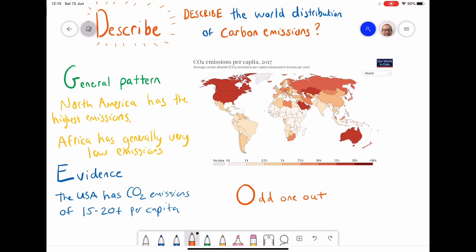If I did want to find an odd one out, I've circled two areas here in Africa. Both Libya and South Africa don't seem to fit the general pattern, which is that Africa has very low emissions, as they have emissions that are in the middle. Libya and South Africa have higher emissions, somewhere between 5 and 10, compared with most of Africa, which is somewhere between 0 and 2.5.